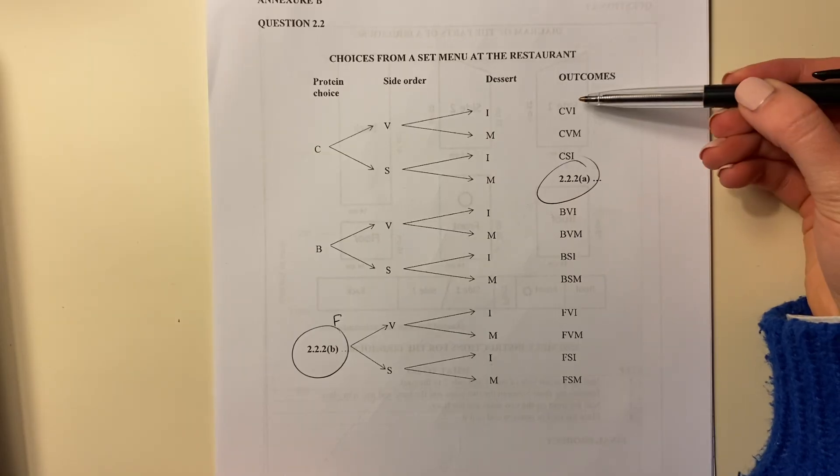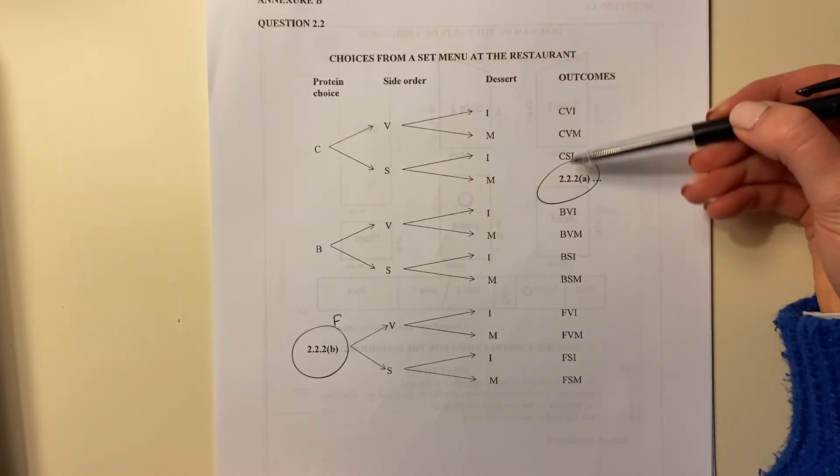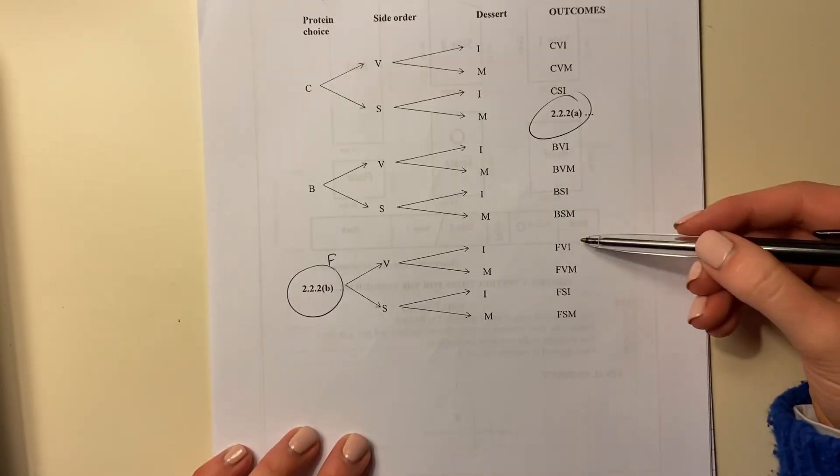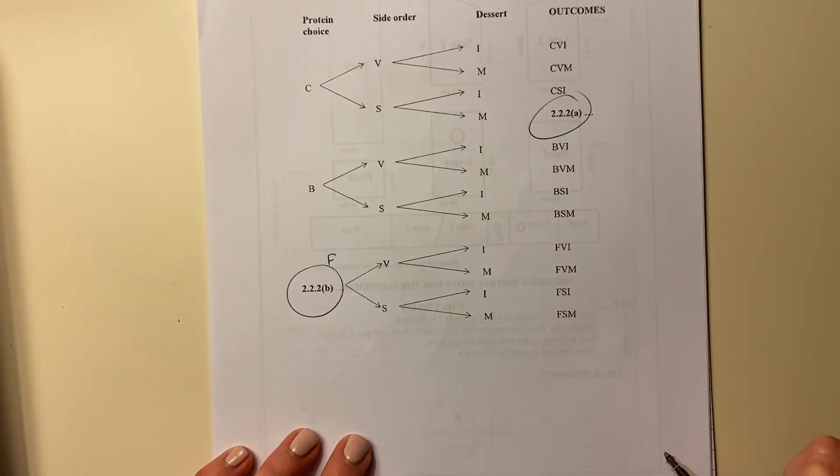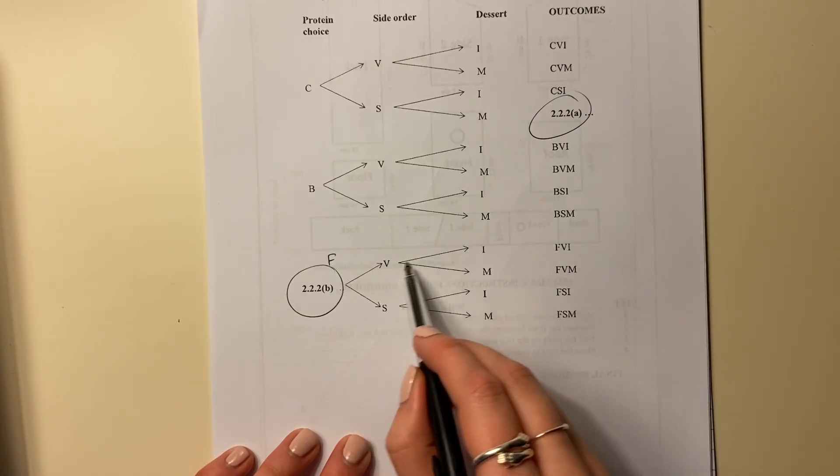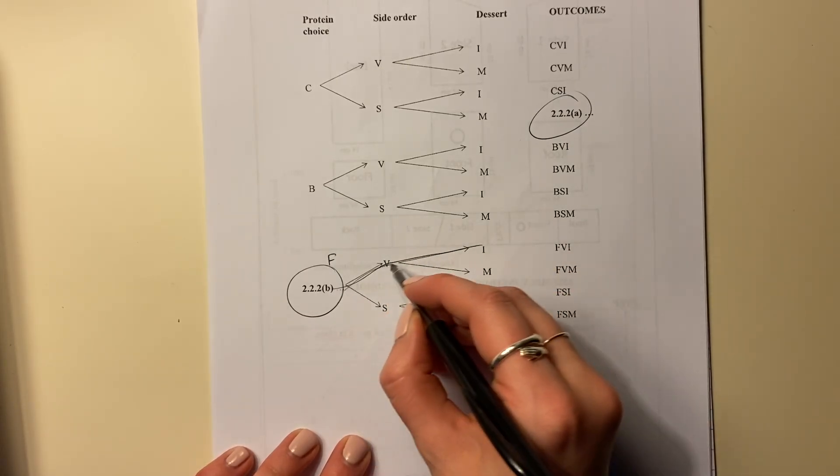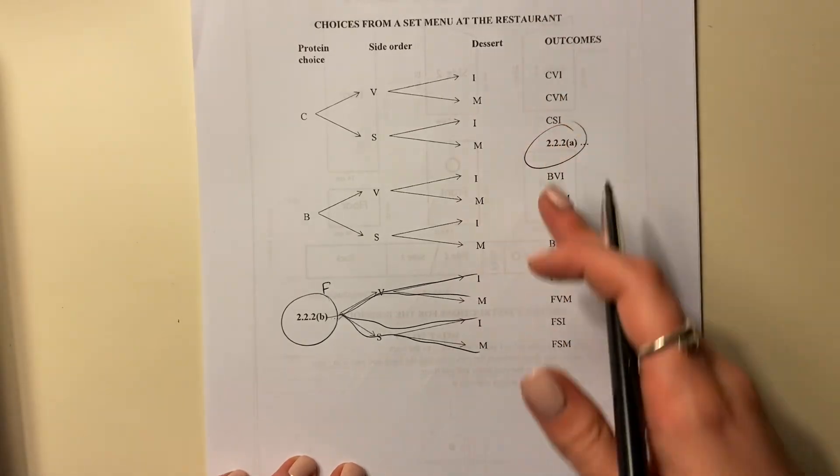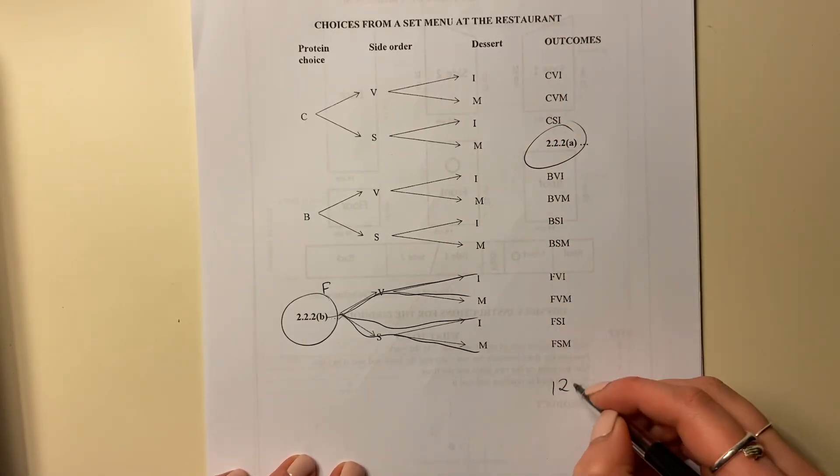You want the combinations at the end. Look here. Here's chicken, and there's four combinations for chicken. For beef, four combinations for beef. For fish, four combinations for fish. Because you see that each of these - there's one pathway, two pathways, three pathways, four pathways. So there's four for each of them, four outcomes.